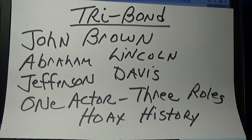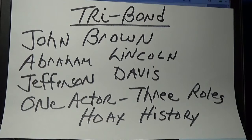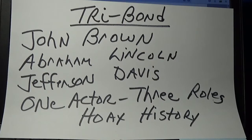Try Bond. What I hope to show you in this video is that one actor played three roles in hoax history: that abolitionist John Brown is Abraham Lincoln, who is Jefferson Davis.